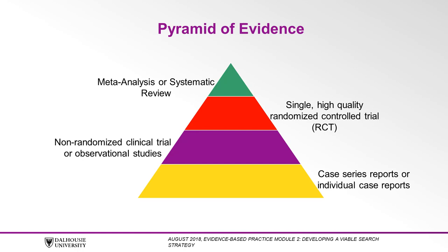PubMed makes it easy to limit searches by study design. The best evidence for a treatment question, found at the very top of the pyramid, will be offered by a well-done meta-analysis or a systematic review of high-quality randomized controlled trials, or RCTs. These types of studies find, appraise, and synthesize individual RCTs, giving a more powerful estimate of the true effect of an intervention than a single RCT could do.